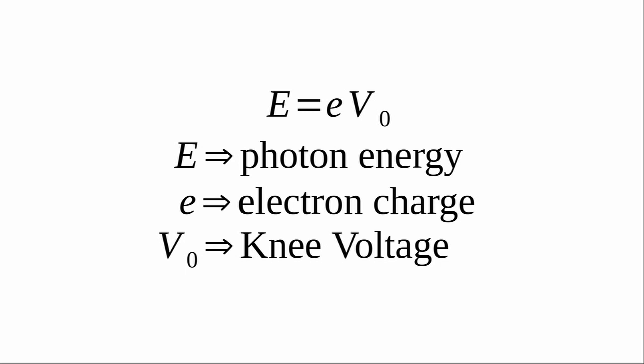The second equation gives the energy released by an electron as it passes through a diode, where capital E is the energy, little e is the charge of an electron, and v0 is the threshold or knee voltage of the diode.